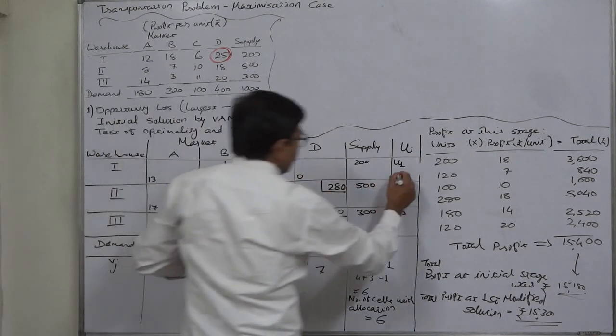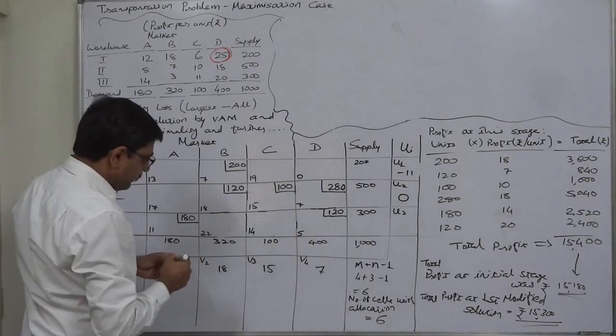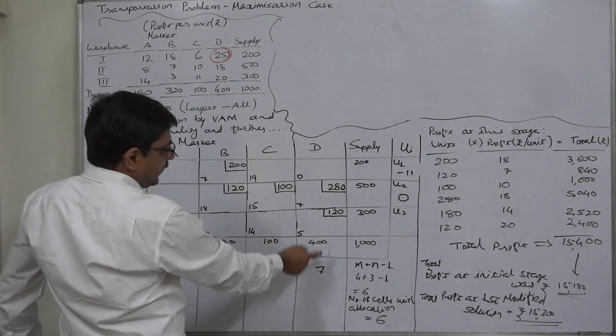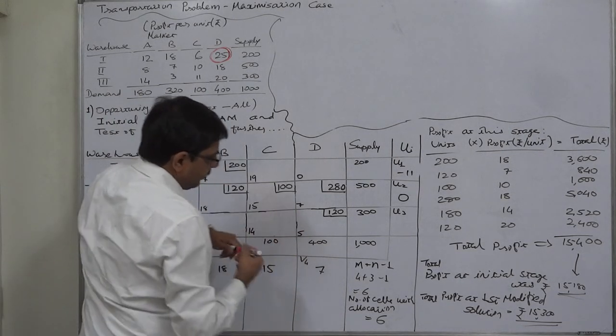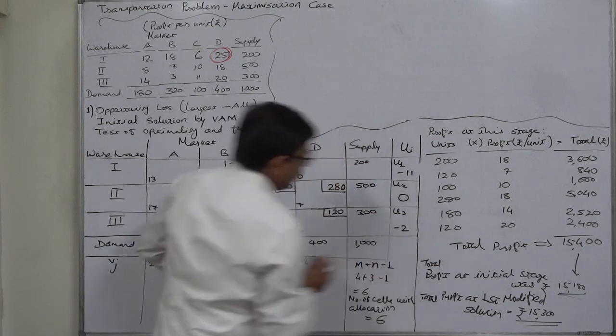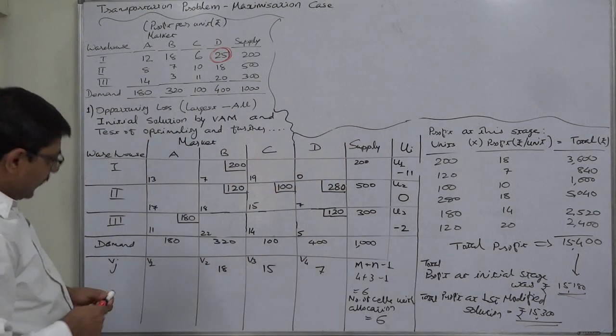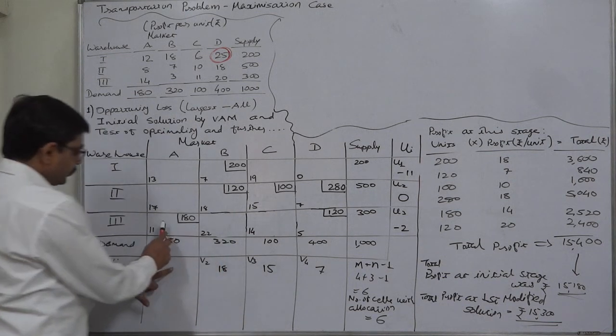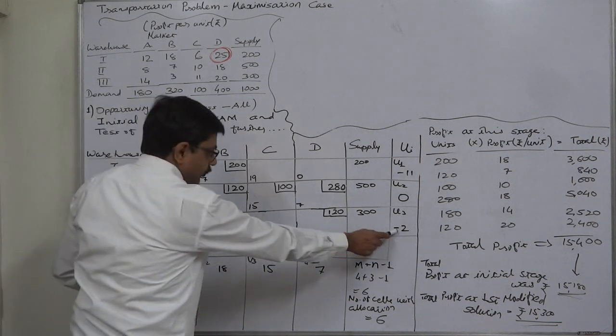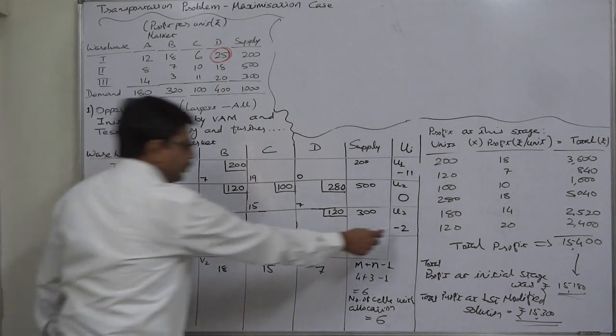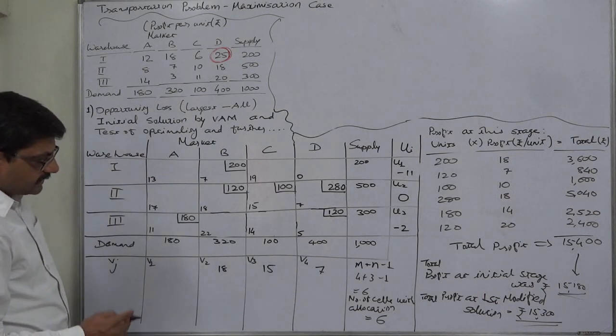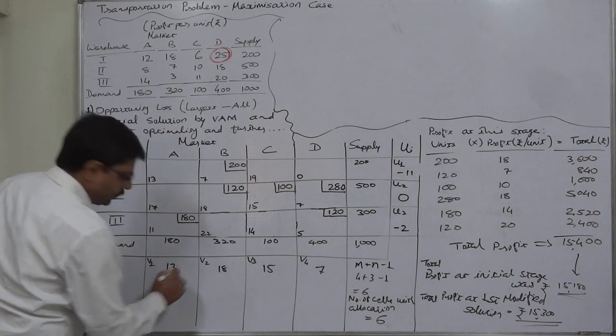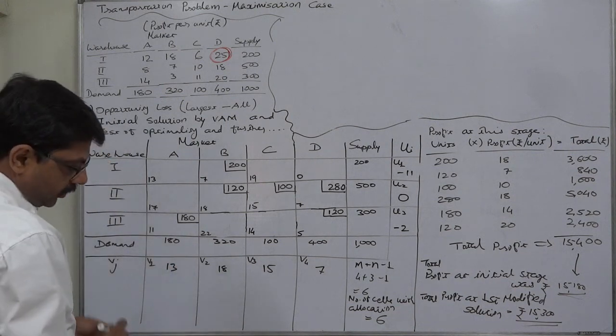And similarly on the basis of this one and this occupied cell, c minus v, 5 minus 7, minus 2 will be the value of u3. And to find the value of v1, we can use this occupied cell and this value of u. C minus u: 11 minus minus 2, that is 11 plus 2, 13 is the relevant value of v1.